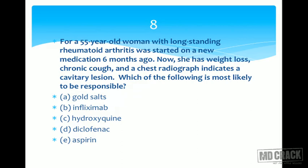Question number 8: A 55-year-old woman with long-standing rheumatoid arthritis was started on a new medication 6 months ago. She now presents with weight loss, chronic cough, and a chest radiograph showing a cavitary lesion — classic features suggesting tuberculosis. Which drug is most likely responsible? Options: gold salts, infliximab, hydroxychloroquine, diclofenac, and aspirin.